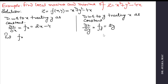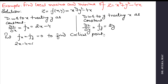Now put the first derivative equal to 0 to find critical points. Here, 2x - 4 = 0 and 2y = 0. After solving, we get x = 2 and y = 0. So (2, 0) is a critical point.